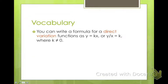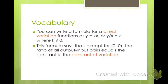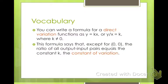So first we're going to start with vocab. I've only got two words for you. You can write a formula for direct variation using the functions y equals kx or y over x equals k. Both are the same. If you divide the first one by x on both sides, you get the same thing. So this formula states that except for (0, 0), the ratio of all input to output pairs equals a constant, k. And it will always pass through (0, 0). This is called your constant of variation.